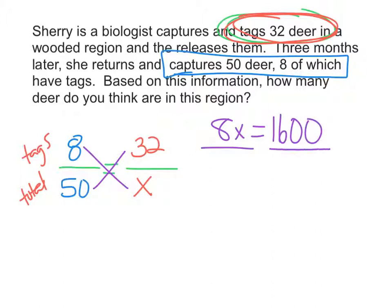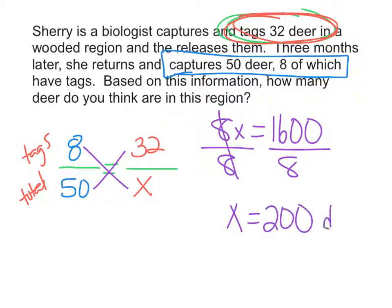We divide both sides by eight, so X equals 1600 divided by eight, which gives us 200. We would anticipate that there are 200 deer in the region she is looking at.